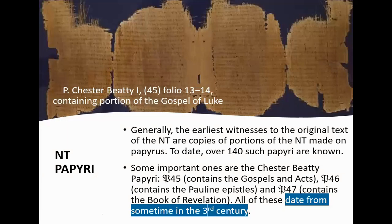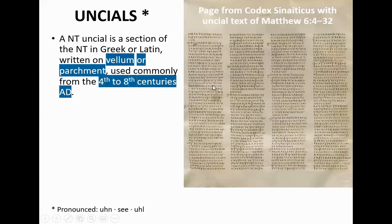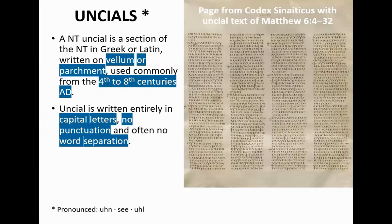The earliest witnesses to the original texts are on papyrus. Amazingly, we still have some of these left — over 140 have been found, dating from sometime in the 3rd century. We've even got some fragments from the 2nd century. Then the uncials: sections of the New Testament in either Greek or Latin, written on vellum or parchment, which is a lot more durable. This was commonly used from the 4th to the 8th centuries AD.